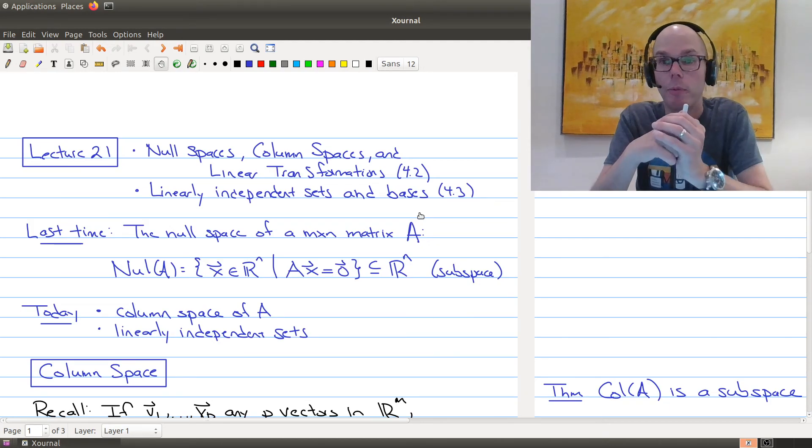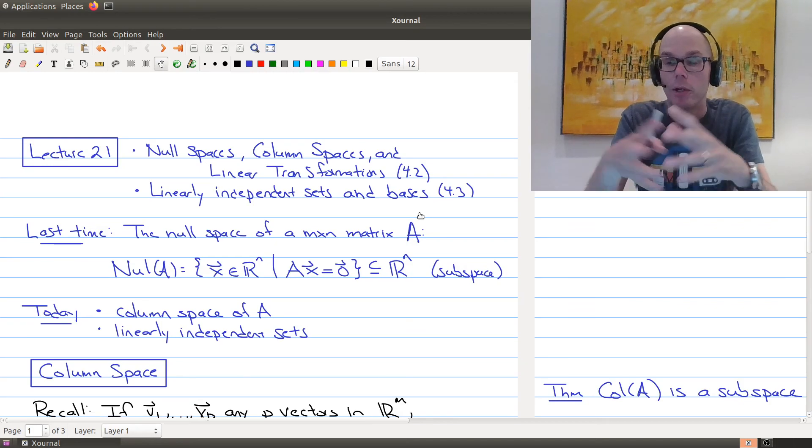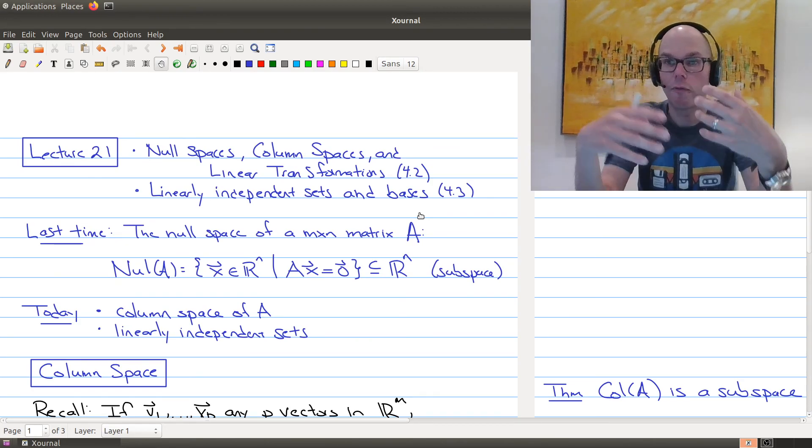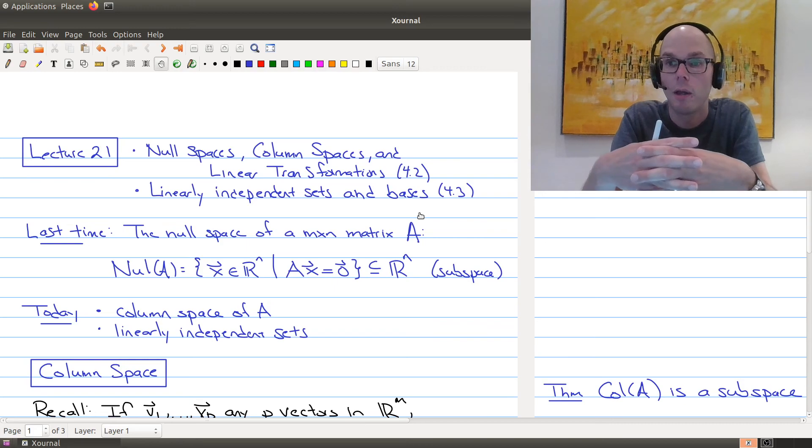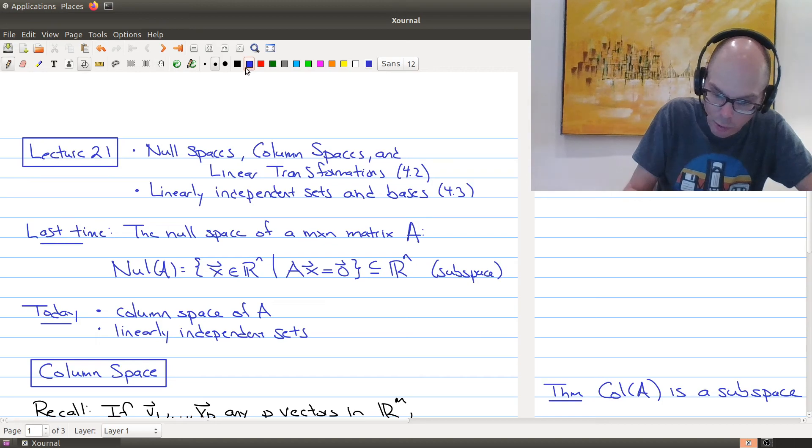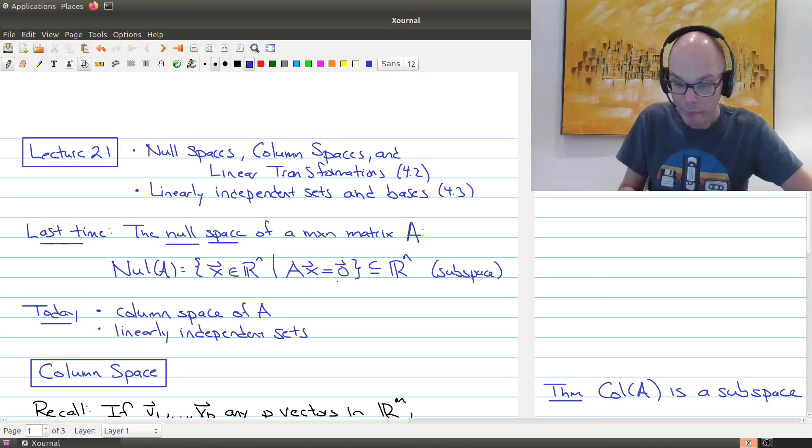So just a quick recap of where we were last time. We've been talking about vector spaces, subspaces, and one of the things that we mentioned in the last lecture was that once you have a matrix, you can start looking at your system of linear equations. And from that system of linear equations, you can actually start building subspaces. And the one space that we looked at was the null space of an M by N matrix. And what that was is the set of all solutions to this equation, A x equals 0. And we proved that this set was a subspace of R N.